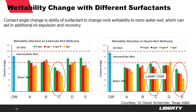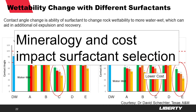Surfactant A, which performed best on the interfacial tension, also seems to fit the bill on wettability change, but it is an extremely expensive surfactant. At the end of the day, it's really a combination of potentially mineralogy, but more importantly cost will always affect and impact the surfactant selection.